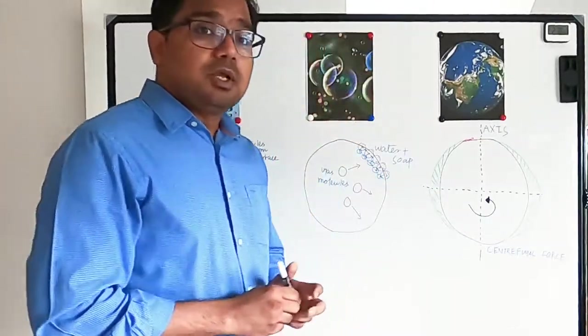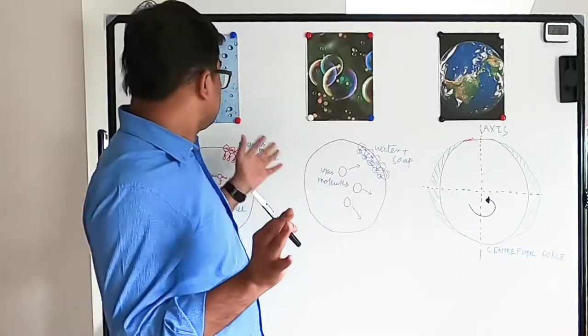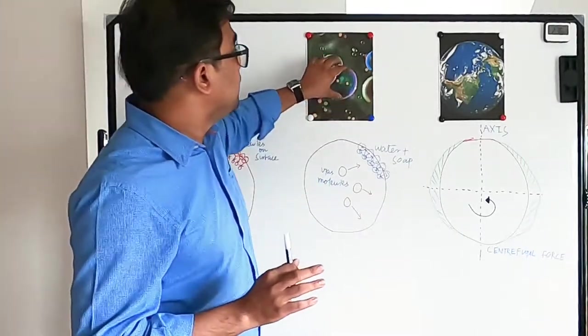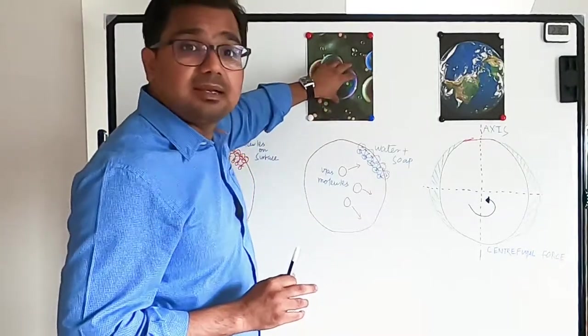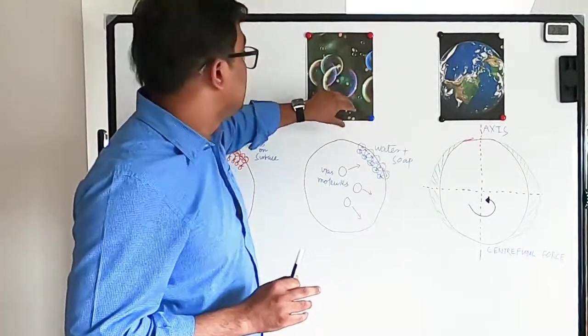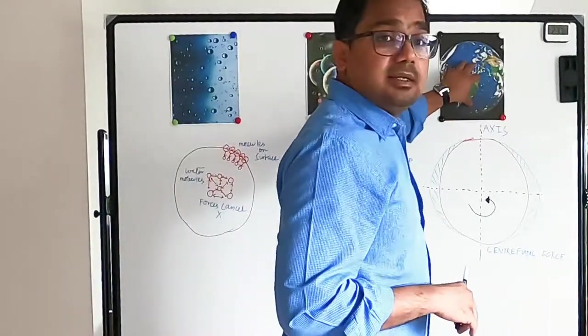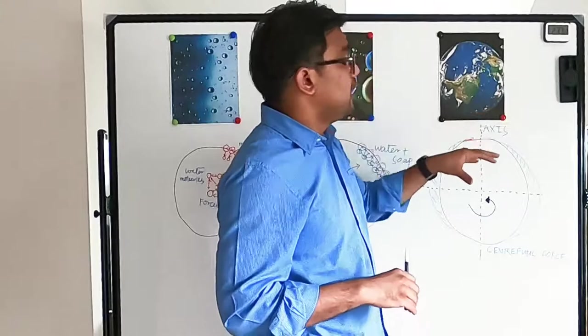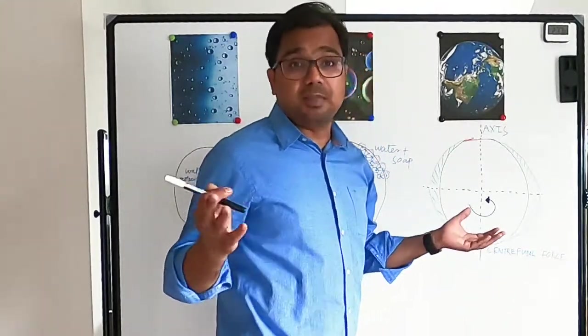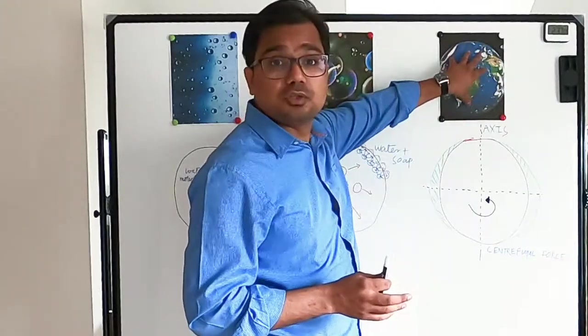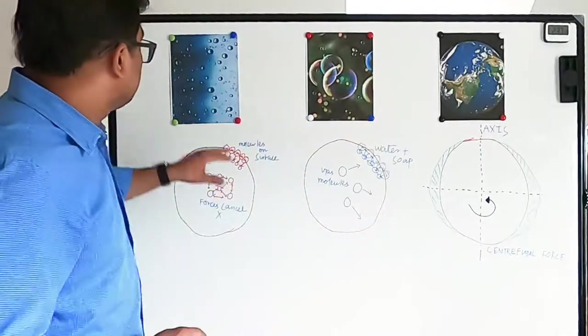The first object, water drops, are made entirely of water. The next, soap bubbles, have gas inside and a layer of soap and water outside. And Earth is made of a lot of materials: some solid, some liquid, some molten metal, but it's also in the shape of a sphere.